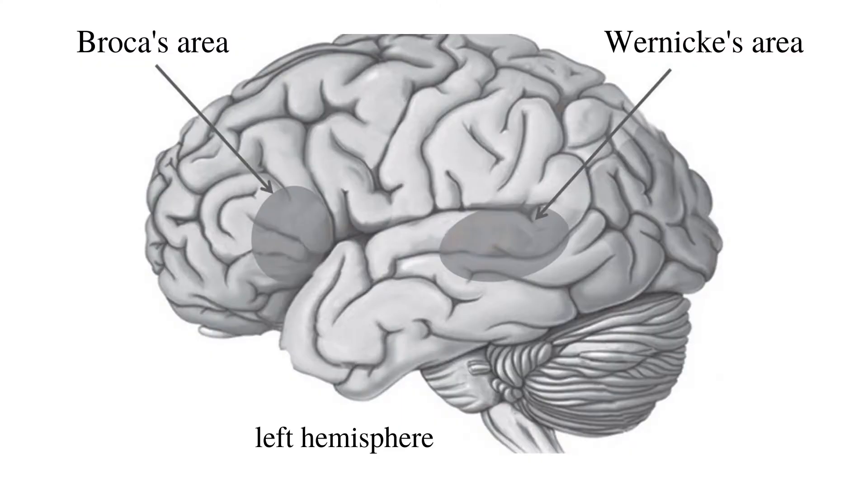Broca observed a patient who was almost unable to speak, but who seemed to understand everything that was said to him. Right after the patient died, he examined the brain and found a lesion in the lower rear area of the frontal lobe, and he concluded that that area must be responsible for language production, because that was the problem with the patient — he couldn't speak. Later, other autopsies confirmed Broca's hypothesis, and now that area is called Broca's area, and the speech impairment caused by a lesion in that area is called Broca's aphasia.